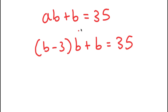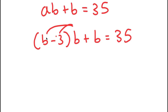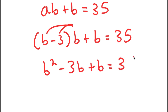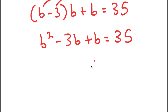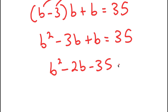So we can solve this. What I'm first going to do is distribute the B. B times B is B squared and B times negative three is negative three B. And now I have this plus B, which is equal to 35. And negative three B plus B is equal to negative two B. And if I subtract 35 on both sides, I get B squared minus two B minus 35 is equal to zero.